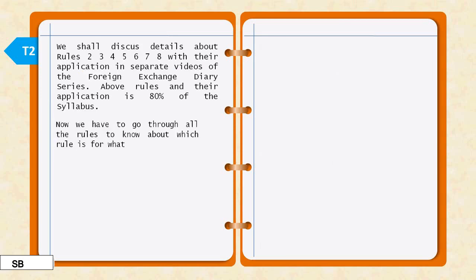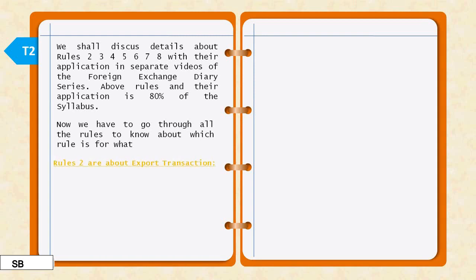There are a total of 8 rules. We have discussed the first rule. The remaining 7 rules are covered in a separate chapter in the foreign exchange book — about 80% of the content. The second rule is about export transactions.